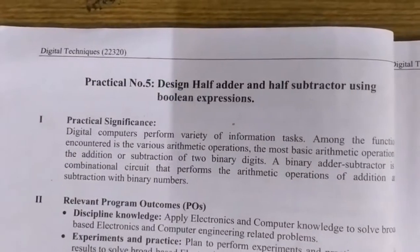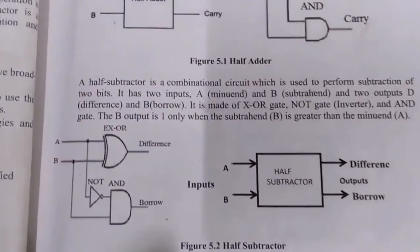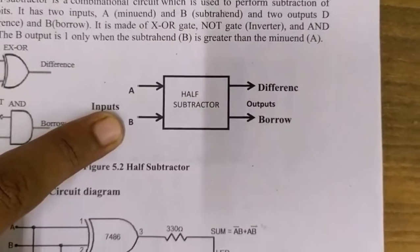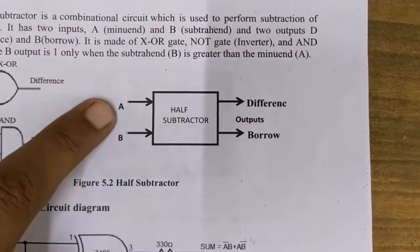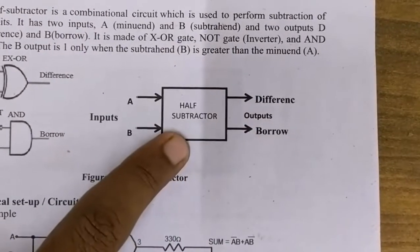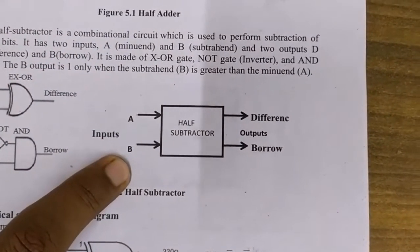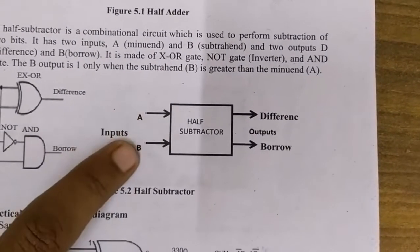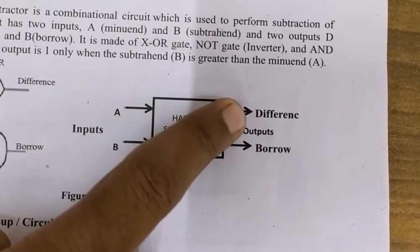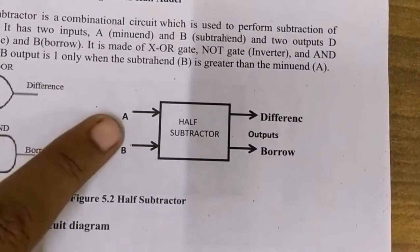The second part of practical number five is the design of the half subtractor circuit. A half subtractor subtracts two numbers: A (the minuend) and B (the subtrahend), performing the A minus B operation. It produces two outputs: the difference, which is the result of A minus B, and the borrow generated after performing the subtraction.